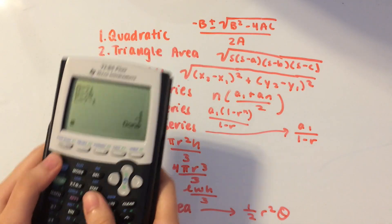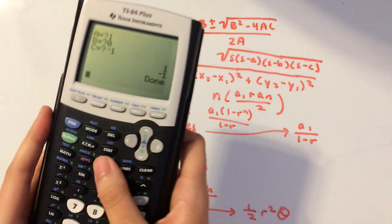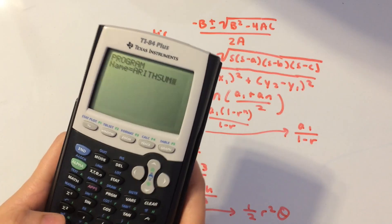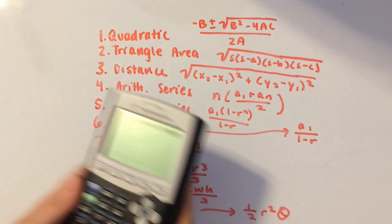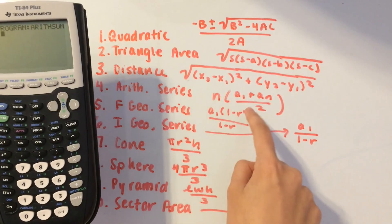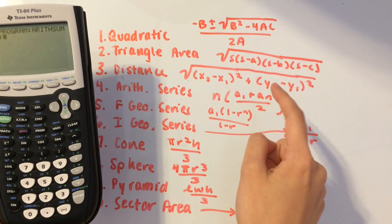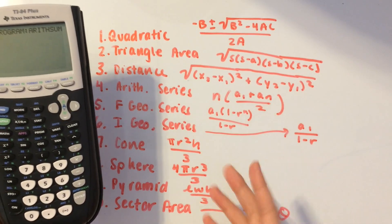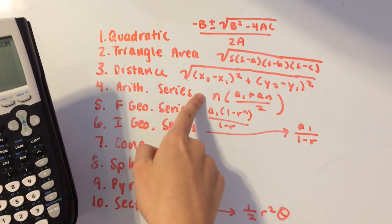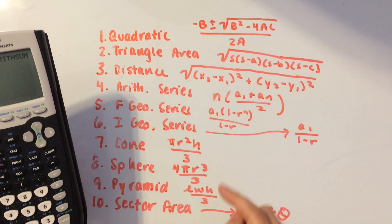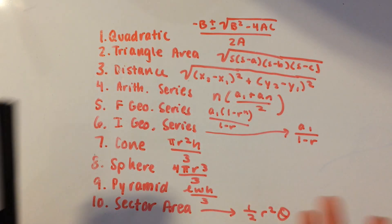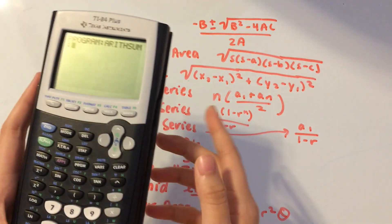The next one is the sum of an arithmetic series. Start a new program and call this ARITH. In the formula we need to prompt for N — the number of terms — A-sub-1, which is the first term (we'll rename it F for first), and A-sub-N, which is basically the last term (we'll rename it L for last). So prompt for N, F, and L.